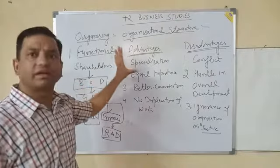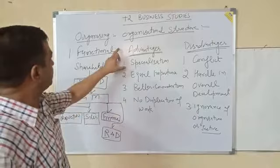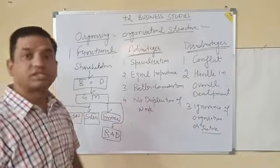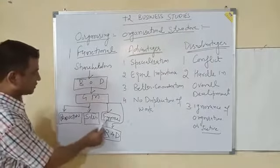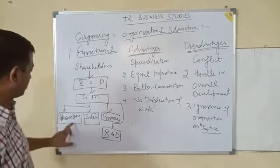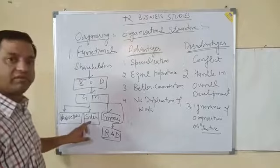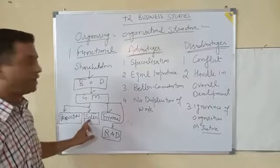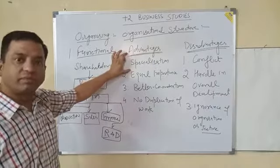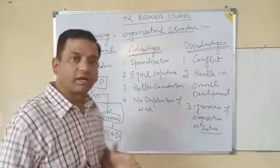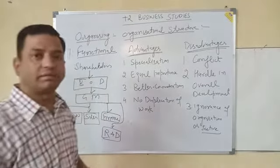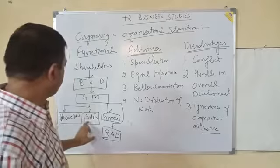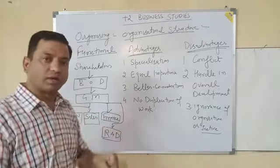Now, what are the different advantages a company gets by following the functional type of structure? The very first is specialization — each and every department will focus on their own work. Production will focus on production, sales will focus only on sales. By doing that work again and again, one will become specialized. Second is better coordination — when each department focuses on its own task, there will be better coordination with no interference between departments.